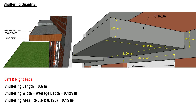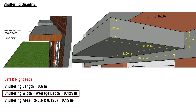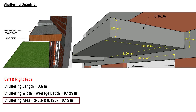For the left and right side faces, the length of shuttering is 0.6 meters and the average depth is 0.125 meters. The shuttering area for both faces will be 2 × 0.6 × 0.125, resulting in a total area of 0.15 square meters.